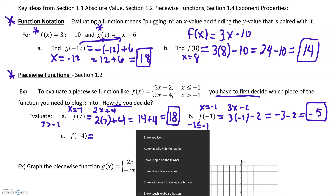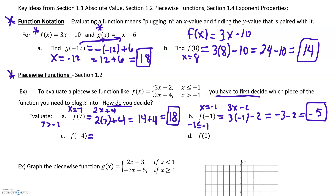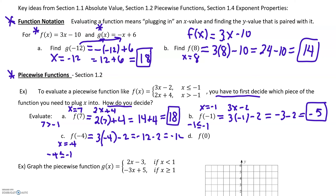Part c: f of negative 4. We look at x equals negative 4 and determine which interval it lives in. Is it less than or equal to negative 1? Yes — it is not greater than negative 1. So we use the first rule, 3x minus 2, and replace x with negative 4. We simplify and get negative 14.